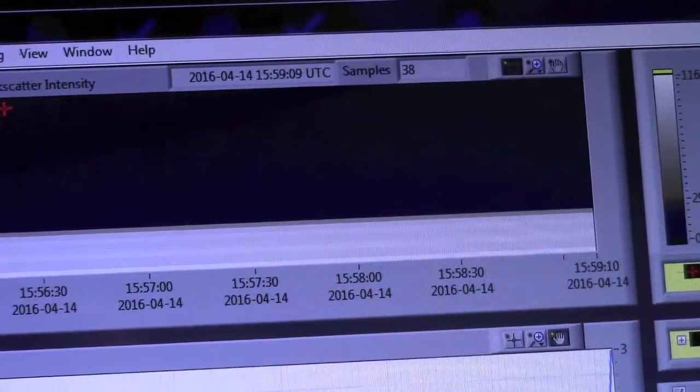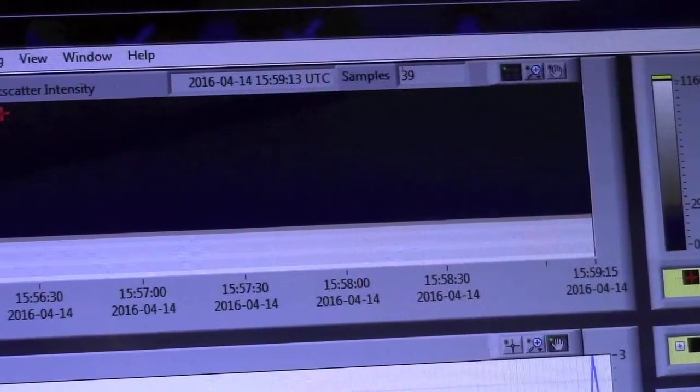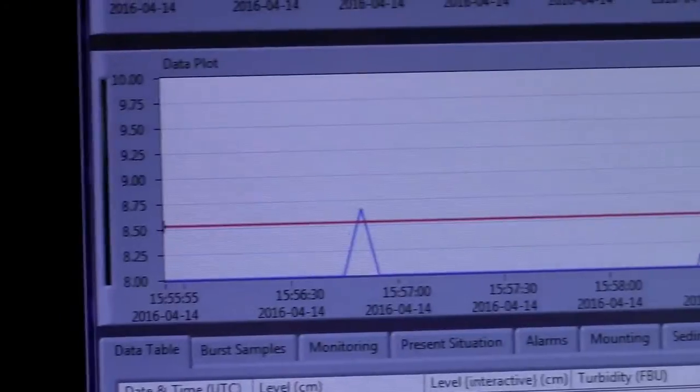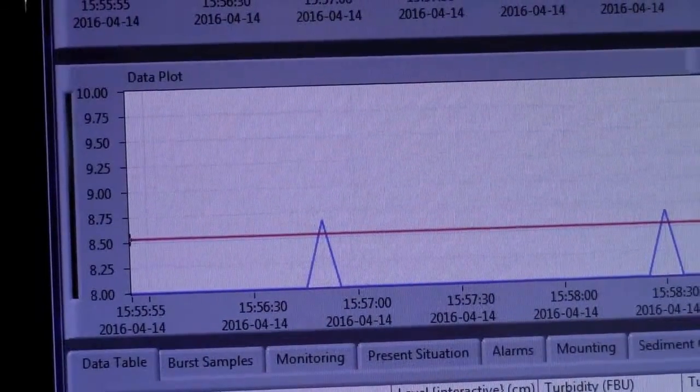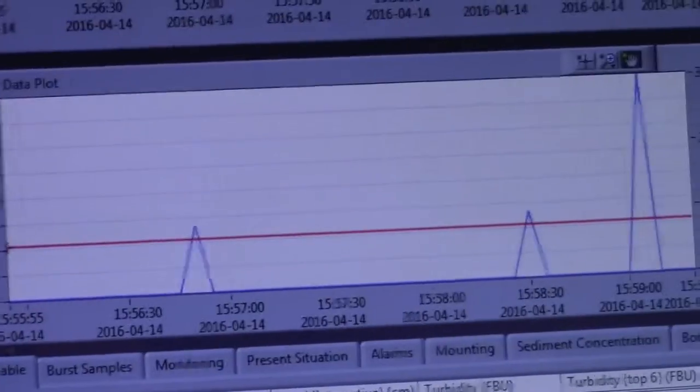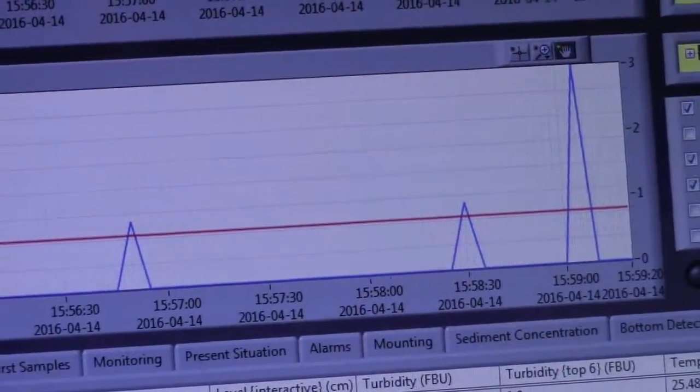The top chart here shows the intensity from the 36 optical backscatter detectors one centimeter apart. In the graph at the bottom, the red line is the interpreted bottom level and the blue line is the turbidity measured on the number 37 optical backscatter detector which is mounted right here.